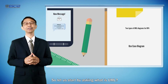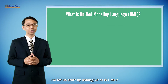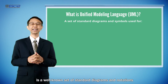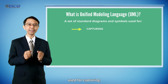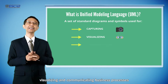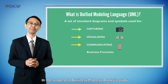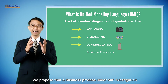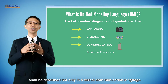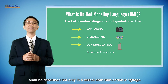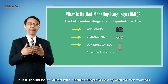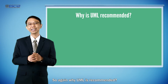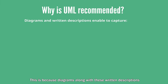Let us start by asking: what is UML? UML, or Unified Modeling Language, is a well-known set of standard diagrams and notations useful for capturing, visualizing, and communicating business processes in the scope of a business process analysis study. We propose that a business process under investigation shall be described not only in verbal communication language, but should also be captured with pictures and diagrams along with written formats.